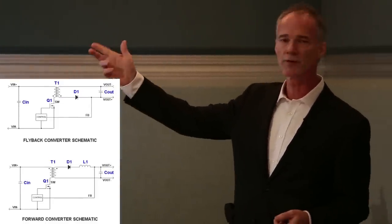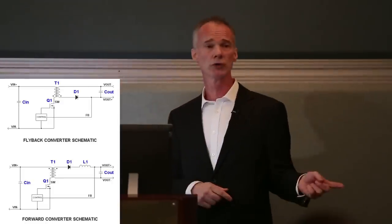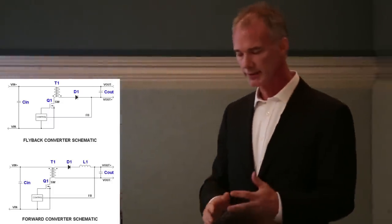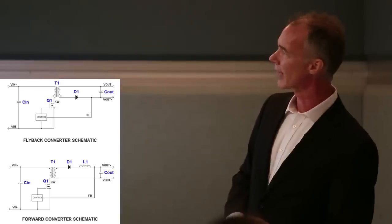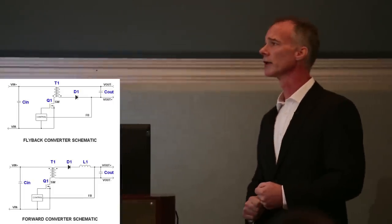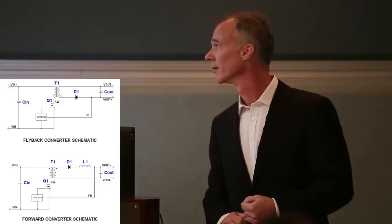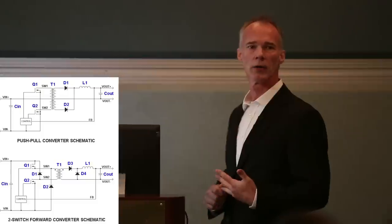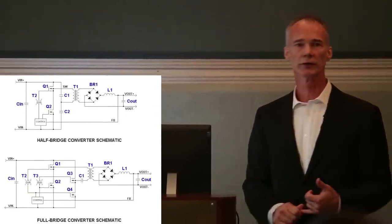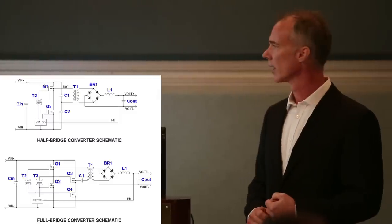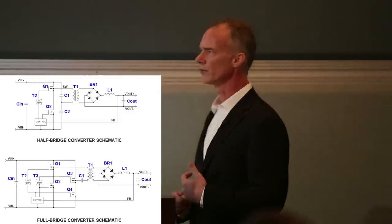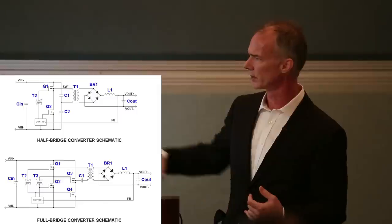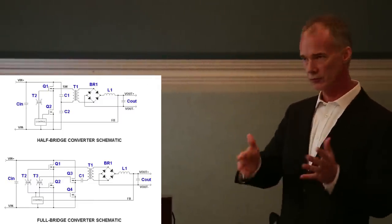The flyback is derived from the buck-boost: the magnetic element is split, coupled, and wrapped into a transformer providing isolation. The forward converter is a change from the buck converter, and all other isolated topologies are derivations of the forward converter — more switches for higher power and efficiency. The half bridge and full bridge are the last two isolated topologies, with more switches for more power. Note: an H-bridge is not an abbreviation for half bridge — it refers to a full bridge, with the 'H' showing how the switches look on a schematic.